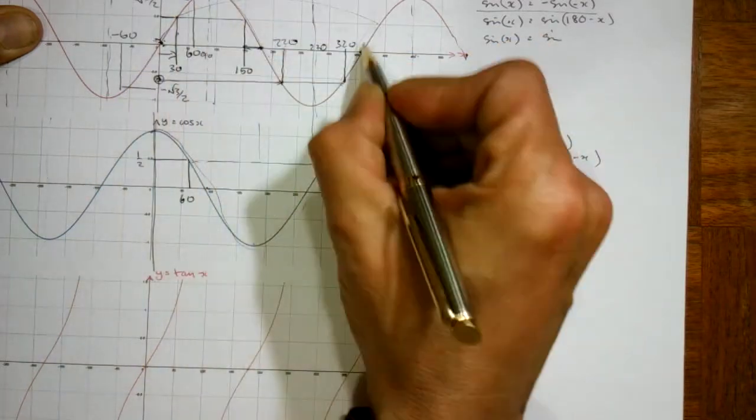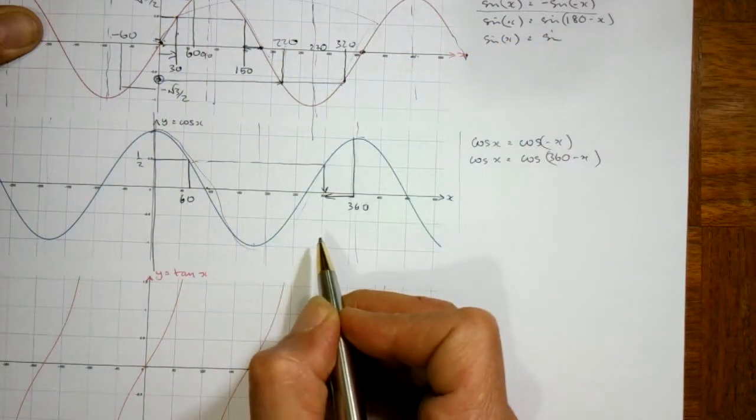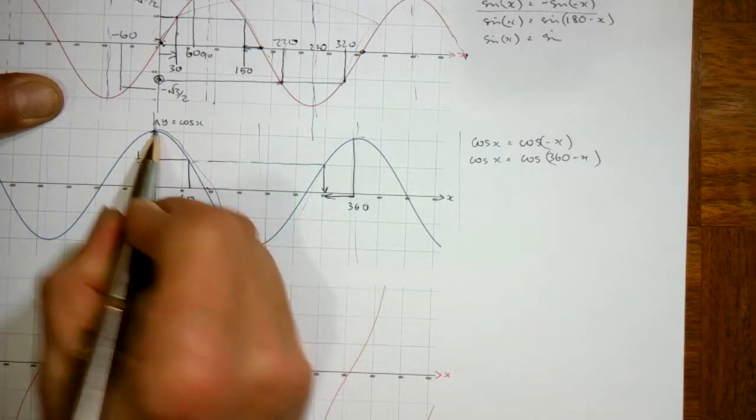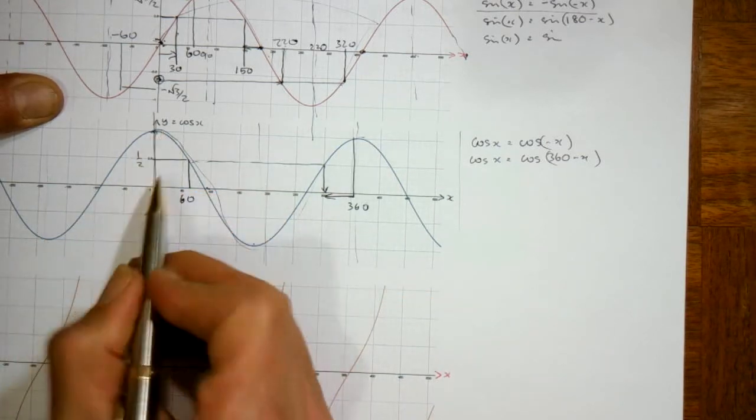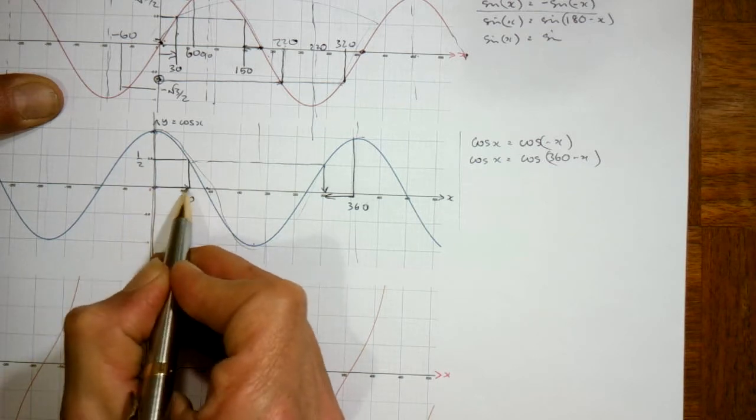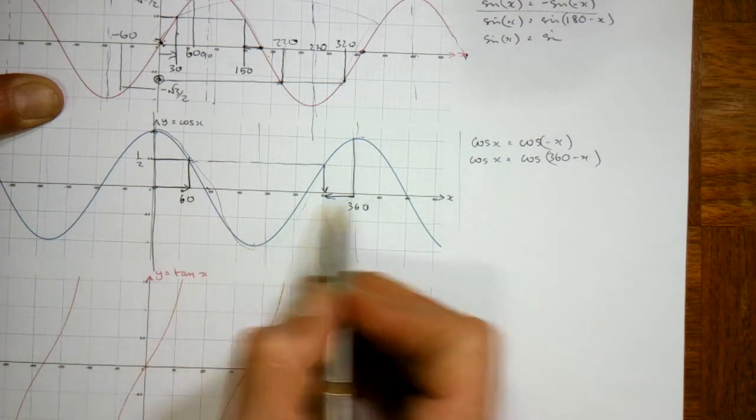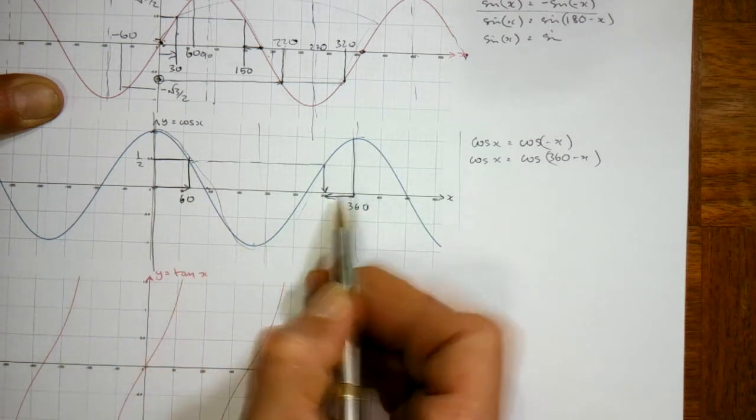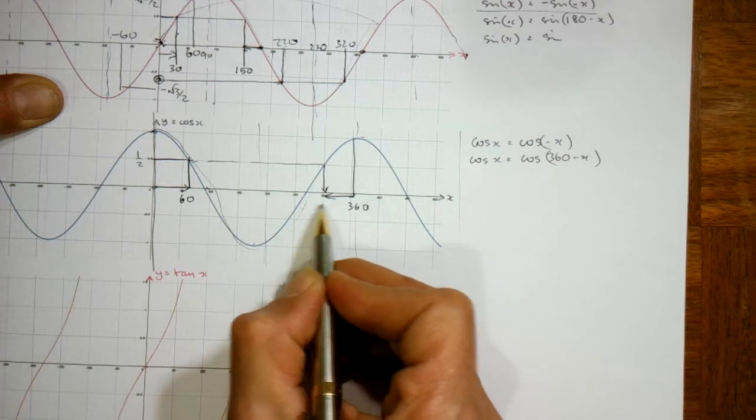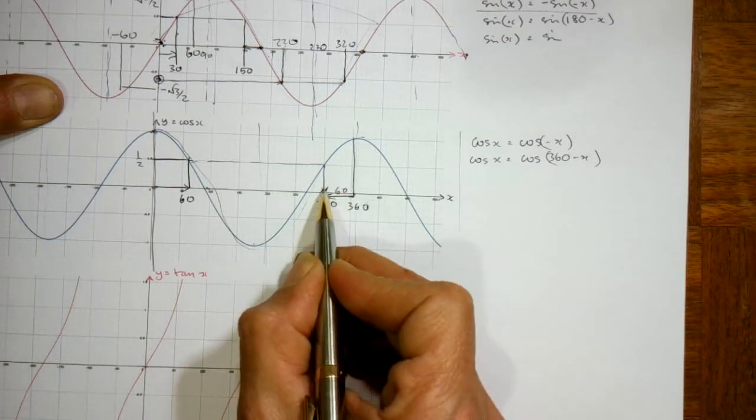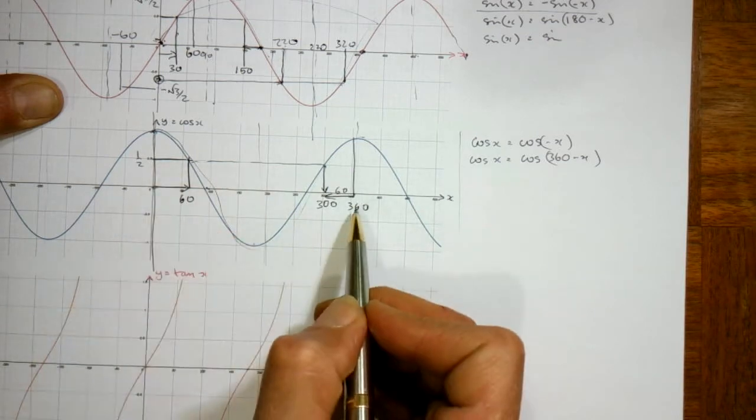So if we start at 0 on the cos graph, angle 0, and we go a distance of 60 and then go up to the graph, the y values are half. If we go backwards from 360, if we go backwards 60, so that distance of 60, this angle is 300. The cos of 300 is the same as cos of 60.